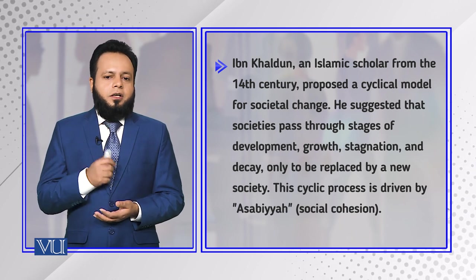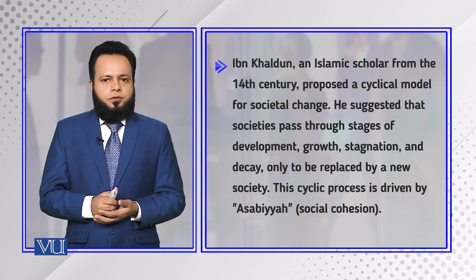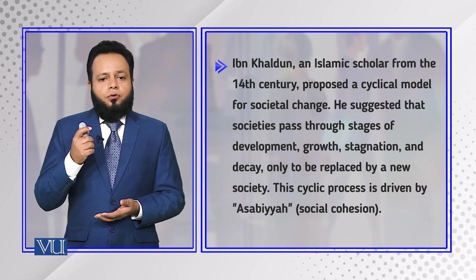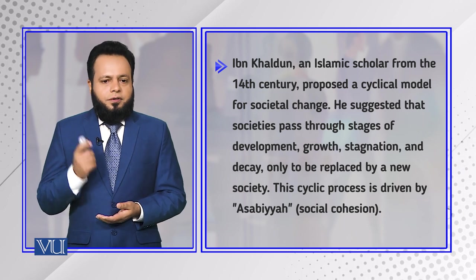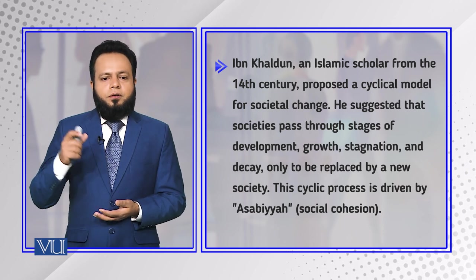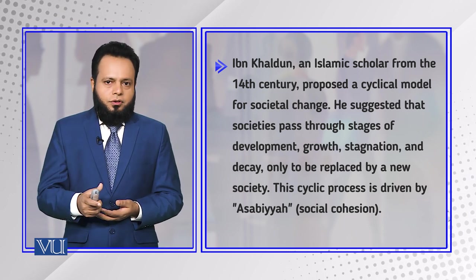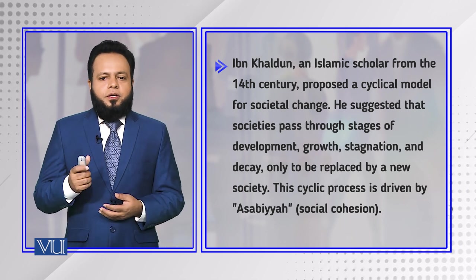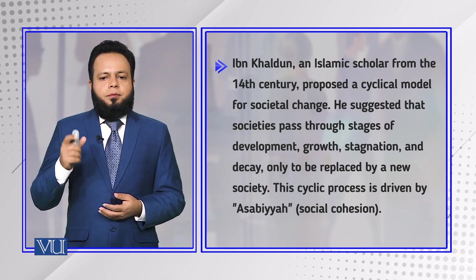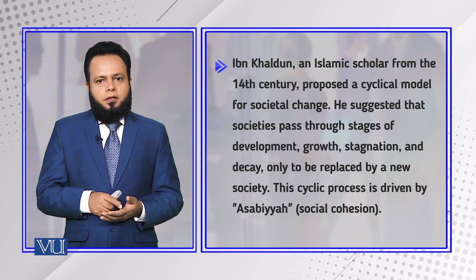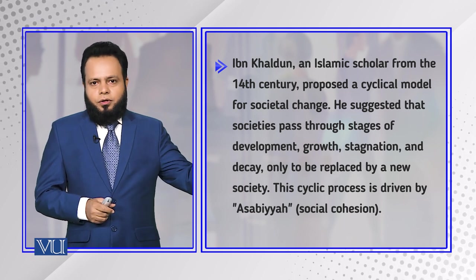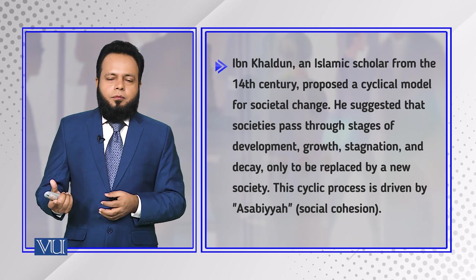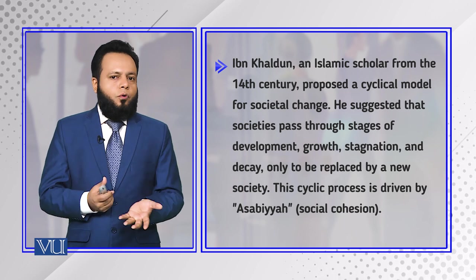Ibn Khaldun, a very famous Islamic scholar of the 14th century, proposed a cyclical model of societal change. He suggests that societies pass through stages of development, growth, stagnation, and decay, only to be replaced by a new society. Although it reflects growth and decline, it does so in four distinct stages.